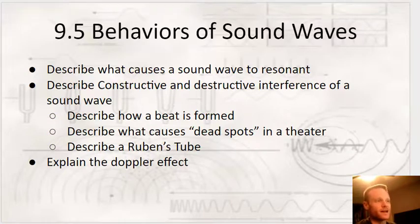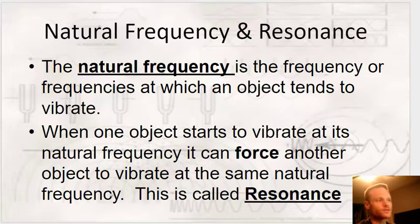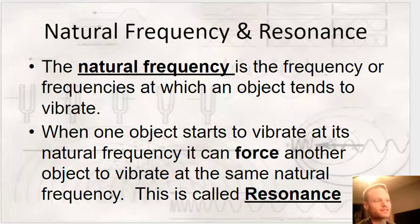The first thing we want to talk about is resonance and natural frequency. A natural frequency, as the name implies, is a frequency at which an object tends to vibrate. Things have a natural tendency to vibrate at specific frequencies — that's just that object's natural frequency. Each object has a different natural frequency. When an object starts to vibrate at its natural frequency, it can actually force another object to vibrate at that same frequency, and that's called resonance.